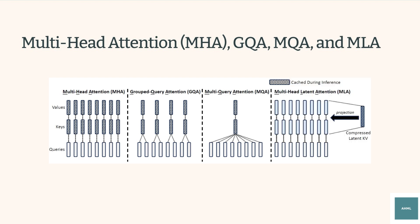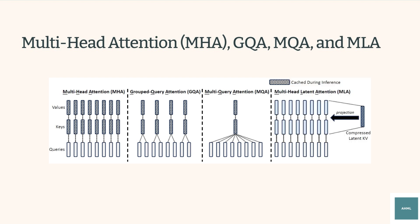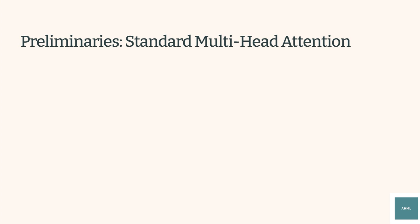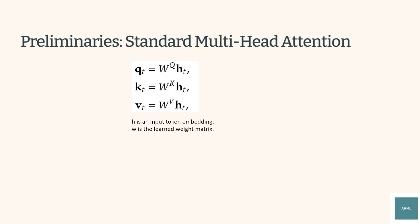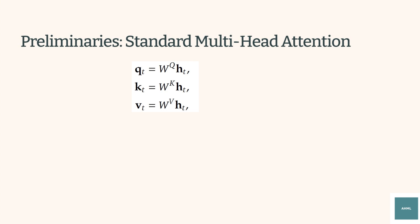DeepSeek V2 introduces multi-head latent attention, which uses low-rank KV joint compression to reduce cache size. The standard multi-head attention takes an input token embedding and projects it into query, key, and value matrices using learned weight matrices. These query, key, and value matrices are then split into multiple attention heads.